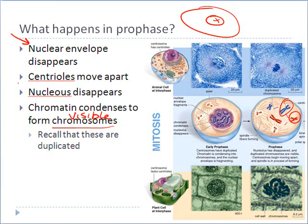Another thing that happens during prophase is the nucleolus also disappears. The nucleolus is a region of the nucleus where RNA manufacture occurs — it's not that it goes away forever, it just becomes not visible for a period of time. Additionally, structures called centrioles begin to move apart. All cells have a centriole, which is a location where microtubules are manufactured. During G2 phase, the centriole was copied, so now there are two centrioles present, and these two centrioles begin to move away from each other in opposite directions during prophase.